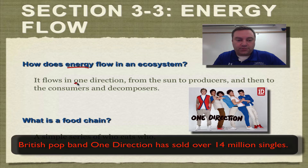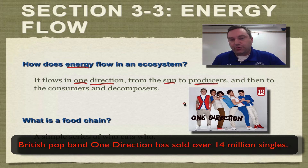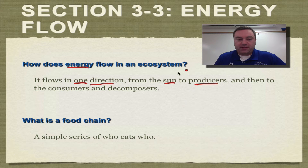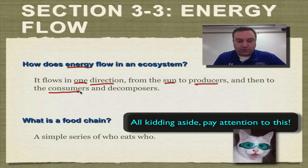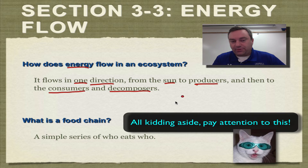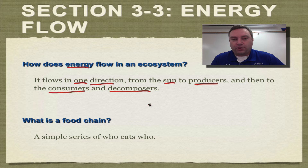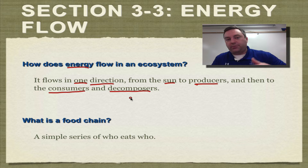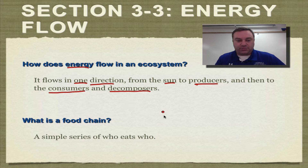All this that a living thing does during its lifespan is going to require energy. Energy flows in one direction — it typically moves from the sun to producers, because most producers make their food through photosynthesis. Then it moves on to the consumers, and finally to the decomposers. Decomposers break down consumers and producers when they are no longer living, and all those nutrients and materials are put back into the cycle of life.